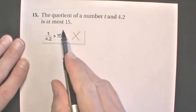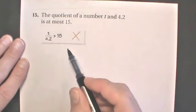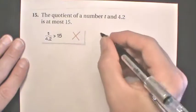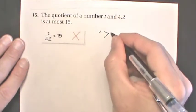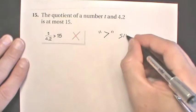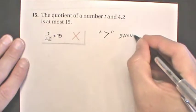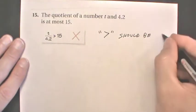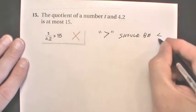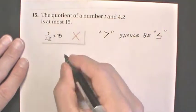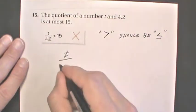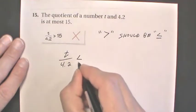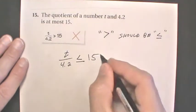At most 15 means it's less than or equal to 15, but they used the greater than sign. So describing the error, we're going to say greater than should be less than or equal. So we're going to write t divided by 4.2 should be less than or equal to 15.